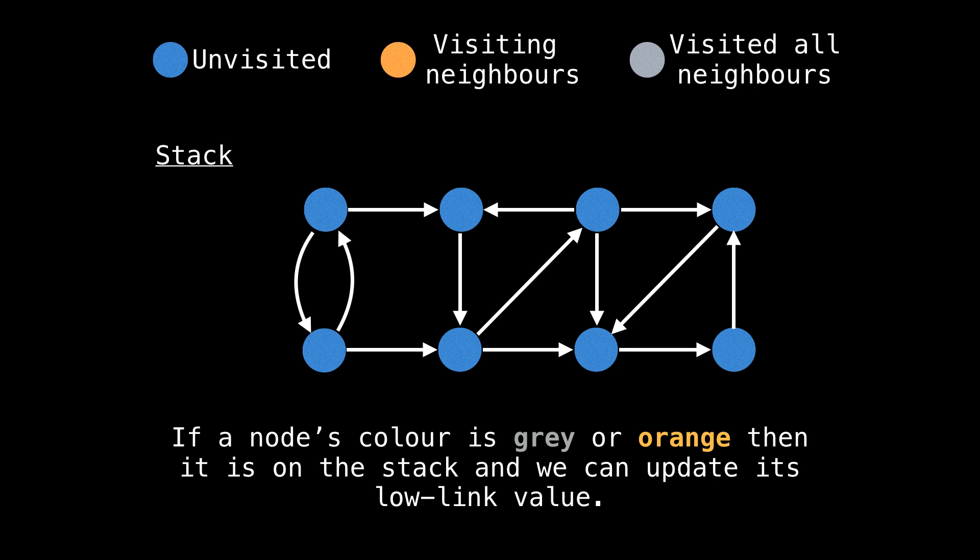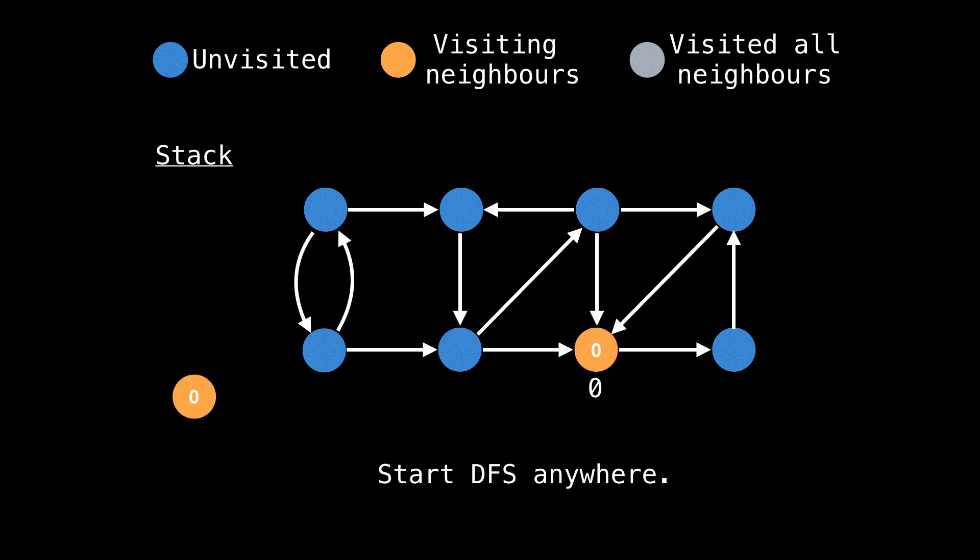Let's do an example. I'm going to mark unvisited nodes as blue, nodes for which the depth first search is still exploring some neighbors as orange, and nodes which the depth first search has explored all of its neighbors as gray. Note that if a node is orange or gray, then it is on the stack and we can update its low link value. I will also be tracking the nodes which are on the stack in the left column. So let's start our depth first search — just randomly pick a node and start there. As we explore unvisited nodes, give each node an ID and a low link value equal to the ID.